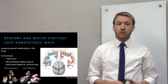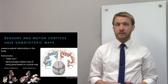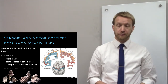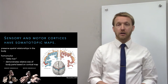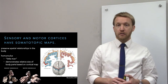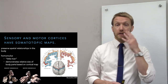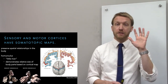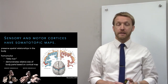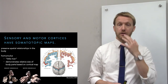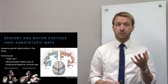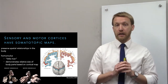The motor cortex is shown on the right — the red strip of cortex — and it looks quite similar to the sensory cortex. You might notice it doesn't quite look as similar to our body as you'd expect. For example, the lips and hands are overly represented on our motor and sensory maps, because our lips are quite sensitive to sensory input.